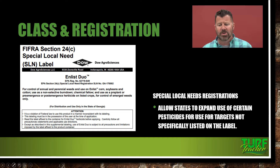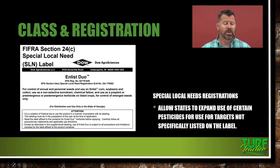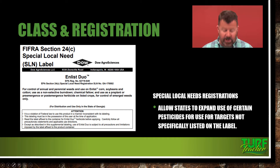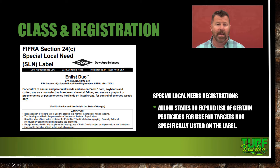Your special local need registrations — discussed on page 55 in your textbook — allow the states to expand the use of certain pesticides for targets not specifically listed on the label. We know a pesticide is going to take care of a certain insect or disease, but it's not written on the label, so we can get a special local needs registration to do that. These are recognized as 24C registrations of special local needs. Make sure you have the special local needs labeling in your possession at the time you're applying that pesticide, because it's not on the label — you've actually got to have that special label.